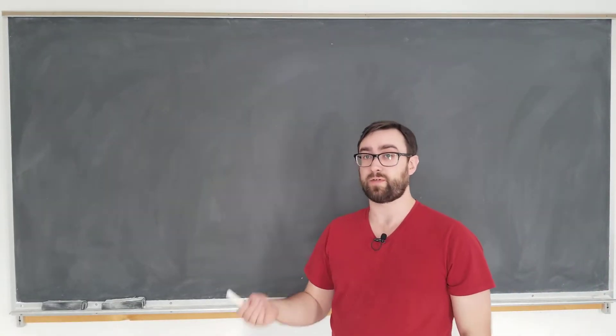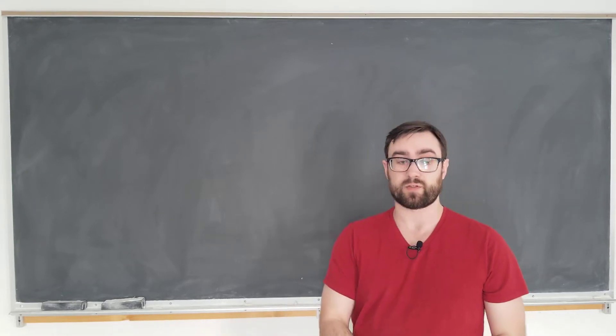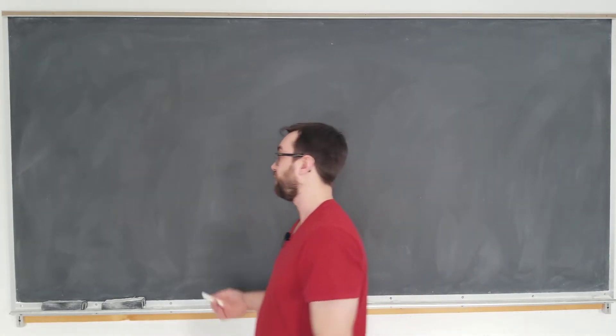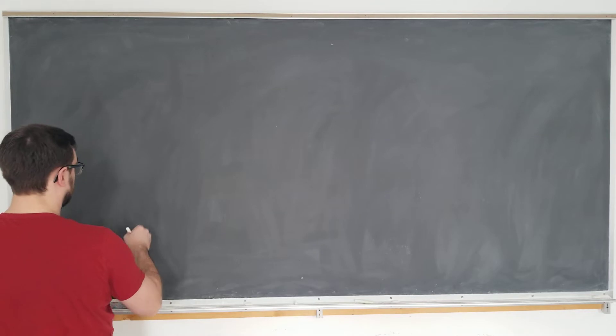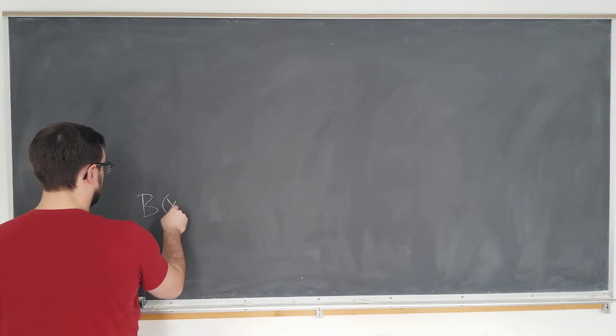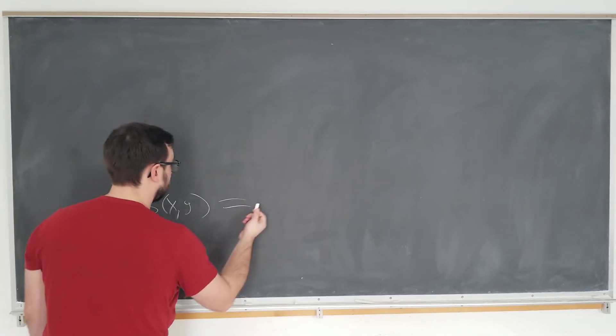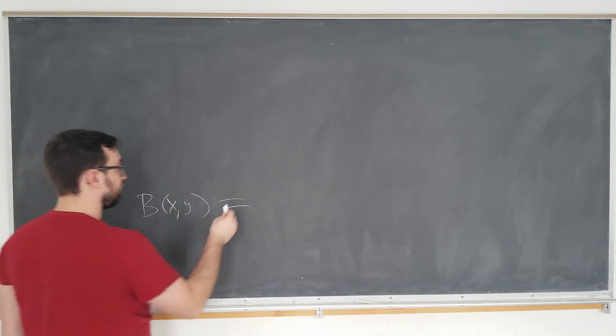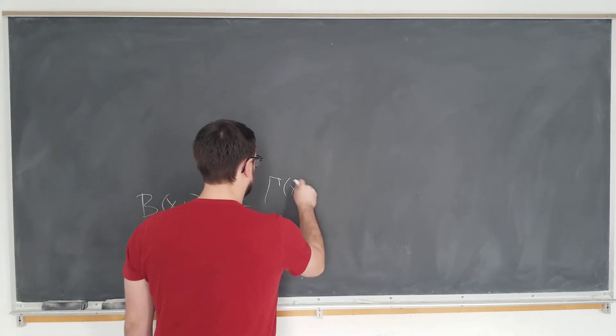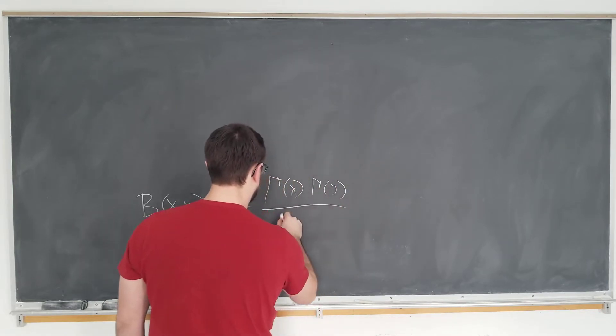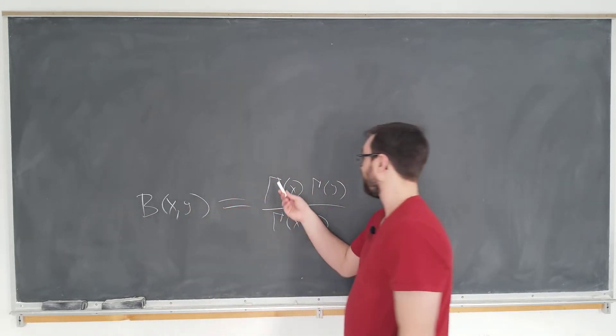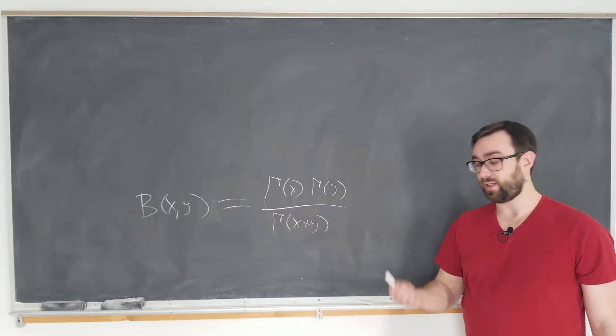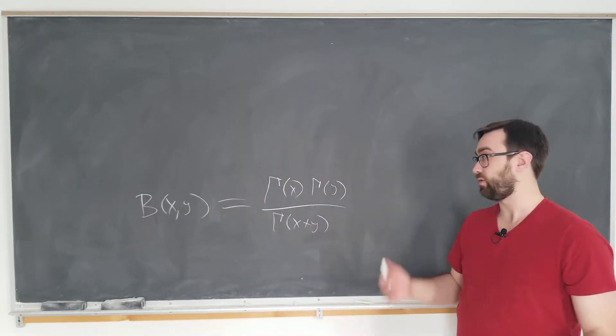Today will be an introductory video for a subsequent video in the future involving the beta function, which is defined as follows: Beta of two variables x and y. Note this is the Greek letter capital beta, not a B, as gamma of x, gamma of y over gamma of x plus y, where of course this is the gamma function that extends the factorial function to non-integer arguments.